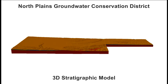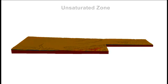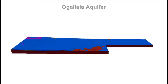These solids represent key subsurface layers, some of which store significant groundwater resources. The top solid displayed in brown represents the unsaturated zone, which is the layer from the ground surface down to the water table. When we peel back the unsaturated zone, we can see the Ogallala Aquifer, shown in blue. This aquifer contains the vast majority of the groundwater in the district.